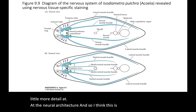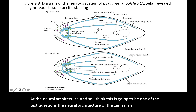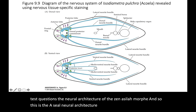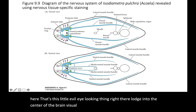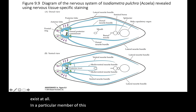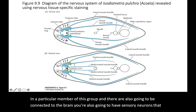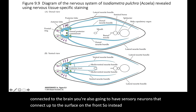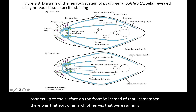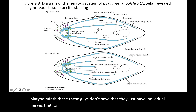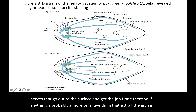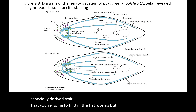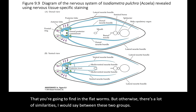Looking in more detail at the neural architecture — this is likely a test question: the neural architecture of Xenacoelomorpha. This is the Acoela neural architecture. The statocyst is right up here, lodged in the center of the brain. Visual cells, if present at all in a particular member, are just one cell big and connected to the brain. There are also sensory neurons connecting to the surface at the front — instead of the arch of nerves found in Platyhelminthes, these just have individual nerves going out to the surface, which is probably more primitive.